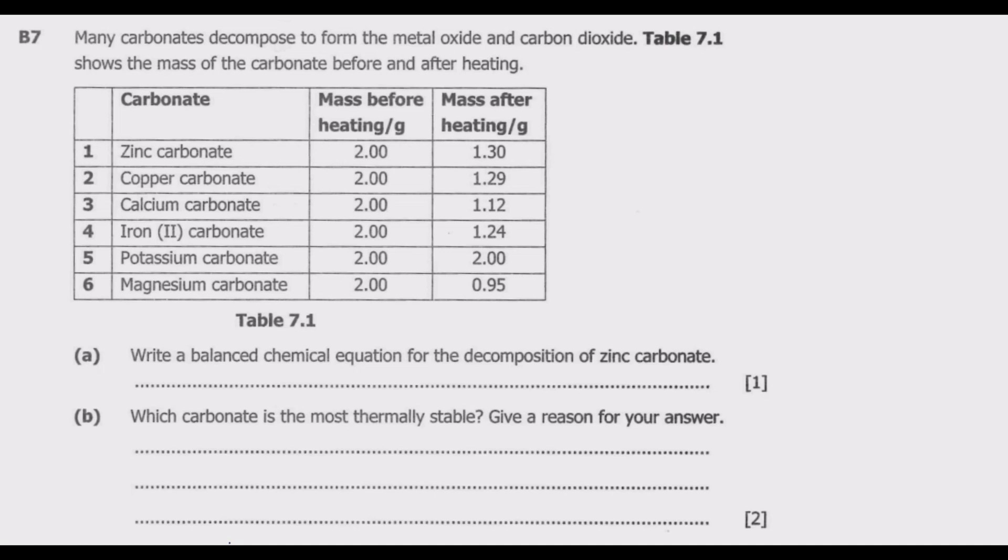Question B7: Many carbonates decompose to form the metal oxide and carbon dioxide. Table 7.1 shows the mass of the carbonate before and after heating. We have six carbonates.